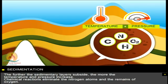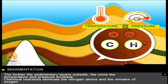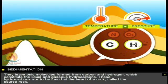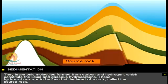Chemical reactions eliminate the nitrogen atoms and the remains of oxygen. They leave only molecules formed from carbon and hydrogen, which constitute the liquid and gaseous hydrocarbons. These hydrocarbons are to be found at the heart of a rock called the source rock.